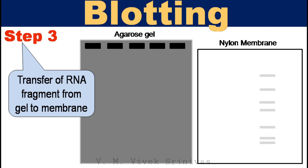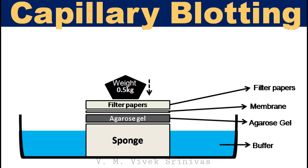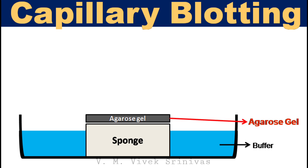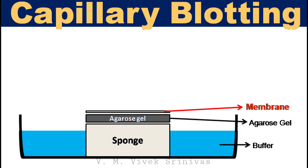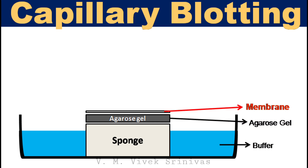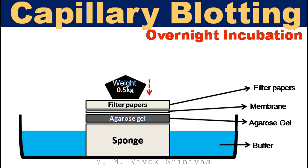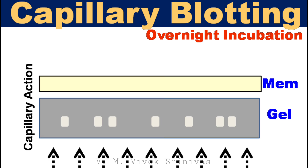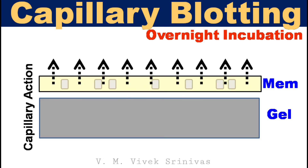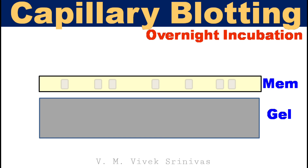This transfer is made possible by capillary action using the following setup: place the agarose gel over a sponge, which in turn is placed in a buffer tank or tray. Over the gel, place the nylon membrane. Pressure is applied evenly over the gel by placing a stack of filter paper and a weight on top of the membrane and gel, to ensure good and even contact between gel and membrane. On overnight incubation, due to capillary action of the buffer against gravity, the RNA fragments in the gel move along, are transferred, and bind to the nylon membrane.